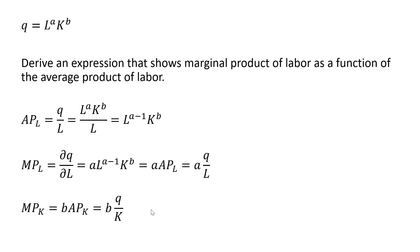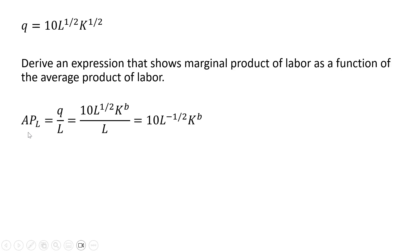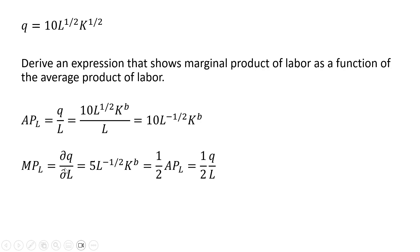Let's do some more examples. Given this Cobb-Douglas production function, let's get the average product of labor. Taking Q and dividing it through by L simplifies down to the following. Solving for the marginal product of labor, this exponent comes down in front — so 1/2 times 10 is 5 — and you'll notice that the marginal product of labor is nothing more than 1/2 multiplied by the average product of labor, where this 1/2 is the exponent on the L term.